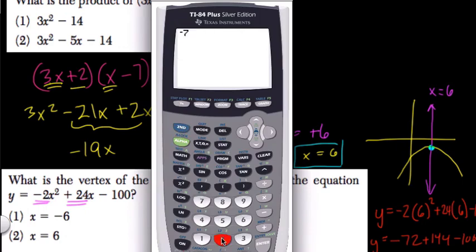Negative 72 plus 144 minus 100. That's negative 28.